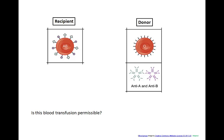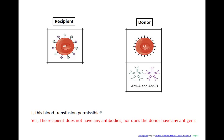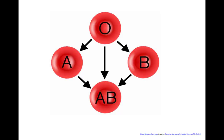Last example: type AB blood is the recipient and type O is the donor. Does type AB have any antibodies against type O's antigens? No. So this transfusion is permissible. It does not matter that type O has both anti-A and anti-B antibodies because it's the recipient's antibodies that do the agglutinating, not the donor's. Therefore, type AB blood can receive all blood types — we refer to it as the universal recipient. Type A can receive type A and type O. Type B can receive type B and type O. But type O can only receive itself. It donates to everyone, so we refer to blood type O as the universal donor.